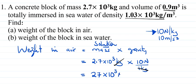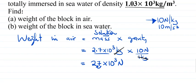The unit is newtons. In standard notation, we move the decimal so that gives us 2.7 times 10 to the power 4 newtons.